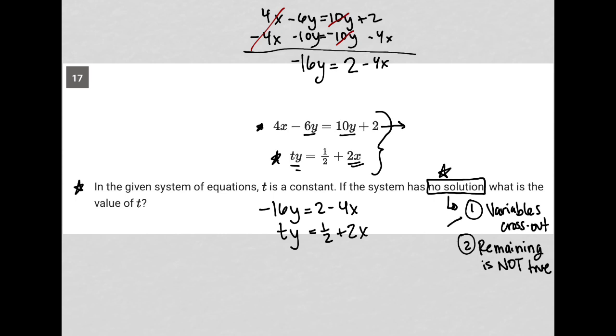I want to do something that causes my variables to cross out. How would I do that? Well, I know that for x, if I multiply the bottom equation by positive 2, this would end up being 2ty equals 1 plus 4x.